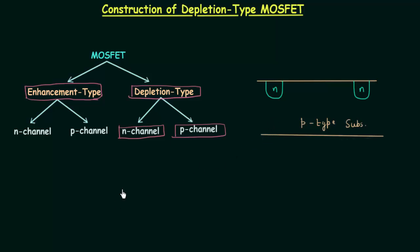In the case of enhancement type MOSFET, voltage VGS was required to enhance the channel because the channel was not present initially. But in the case of depletion type MOSFET, the channel is present from the beginning. So along with two n-wells, we also create an n-channel connecting the two n-wells.